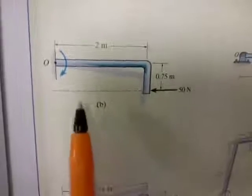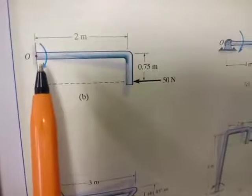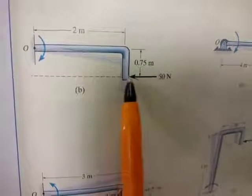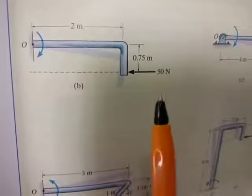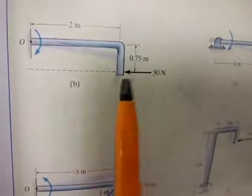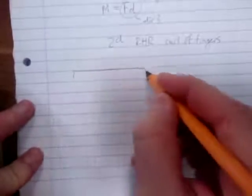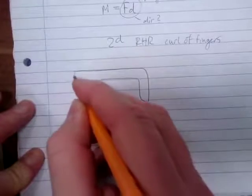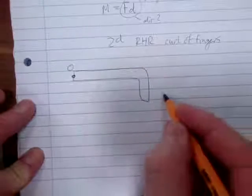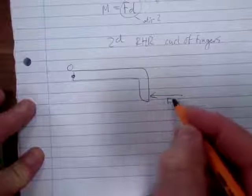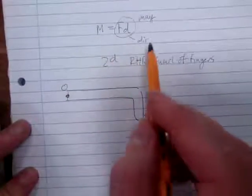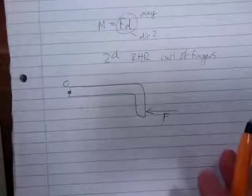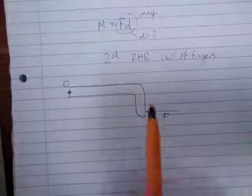What about this next one? We have the point of rotation O and a force acting on a curved beam. The key thing when determining the moment arm is: extend the line of action of the force, then from point O draw a line perpendicular to that line of action. That perpendicular distance is your D.